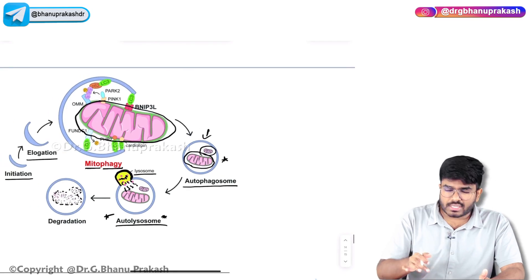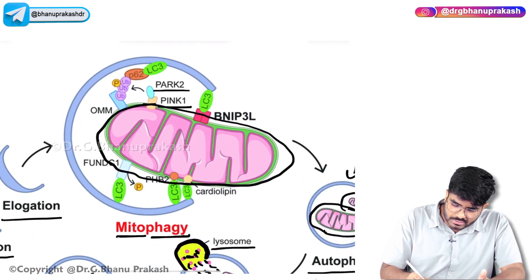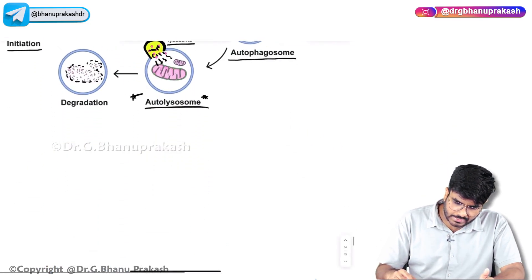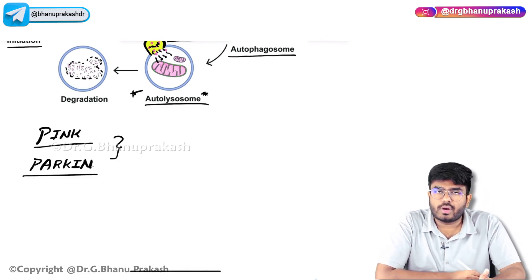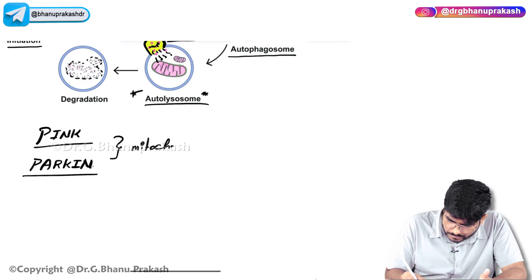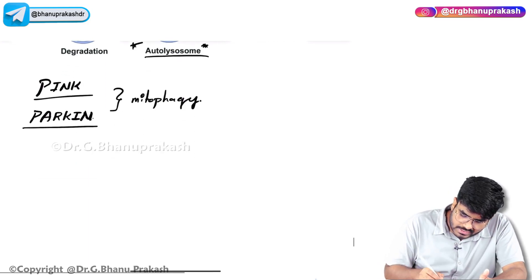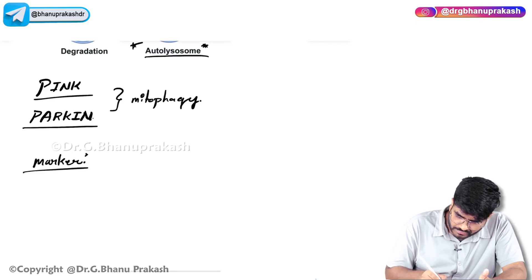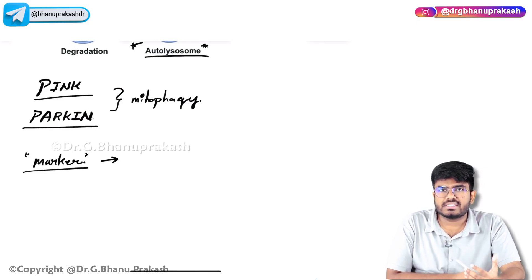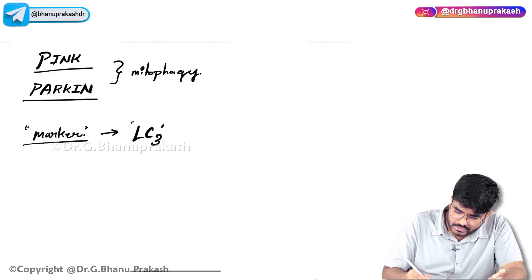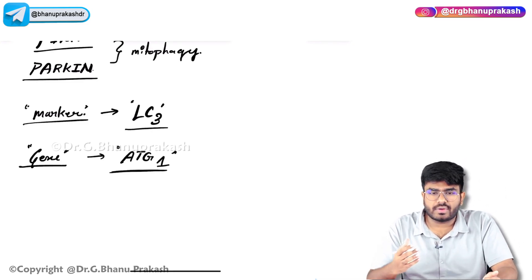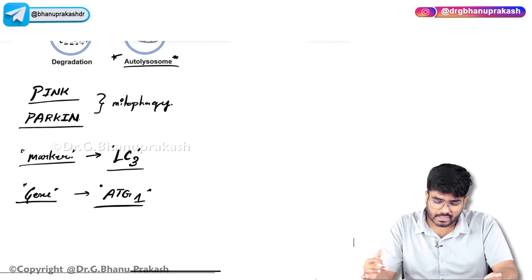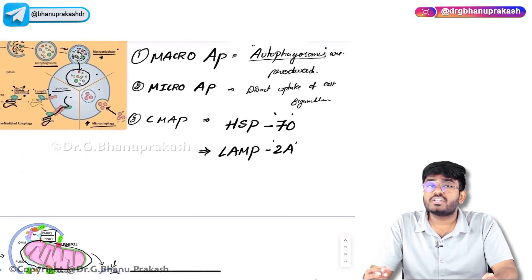In the process of mitophagy, two important molecules are present: Pink and Parkin. Pink and Parkin are involved in mitophagy. The marker of autophagy is LC3 — LC3 is the marker of autophagy. The gene responsible for autophagy is ATG1. ATG1 gene is involved in the process of autophagy, and the marker for autophagy is LC3. Pink and Parkin are involved in mitophagy; LAMP2A and heat shock protein are involved in chaperone-mediated autophagy.